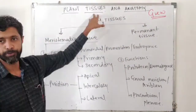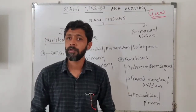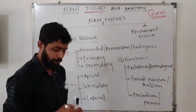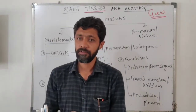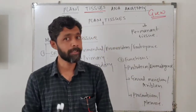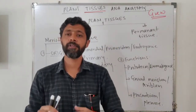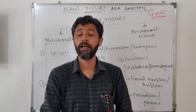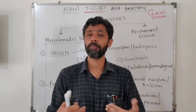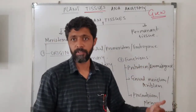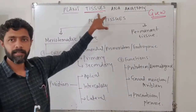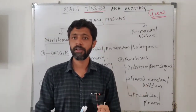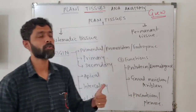In plant anatomy, you will observe different types of tissues. Different types of tissues are formed by the organization of groups of cells. Tissue is a group of cells which have a common origin, common function, and identical structure. Such a group of cells that performs a common function and has a common origin is considered as tissue.